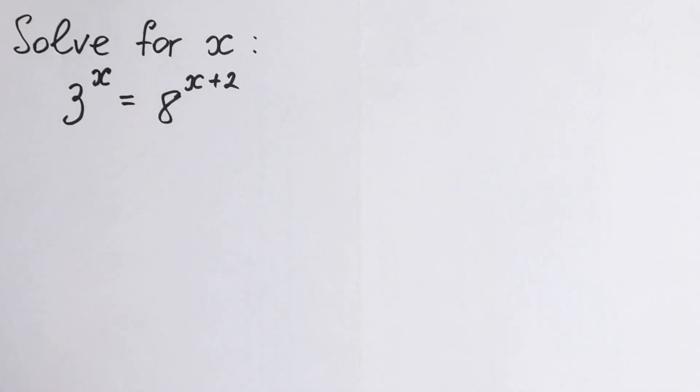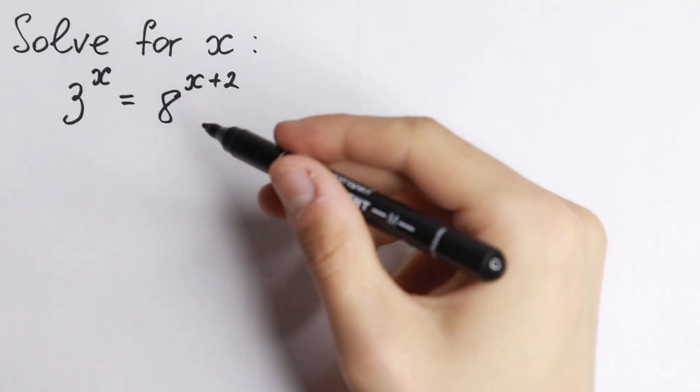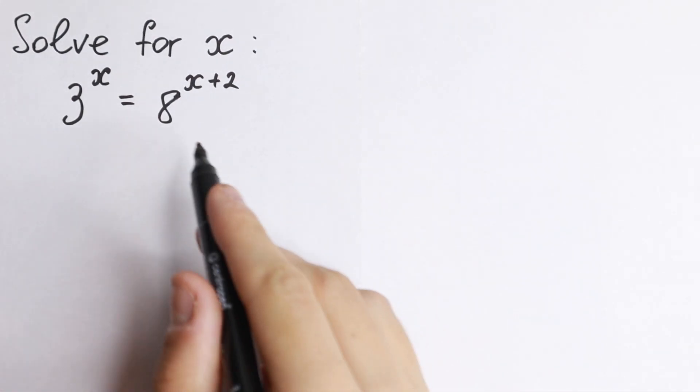Hello everyone, welcome back to MathMode. Today we have a really interesting exponential equation: 3^x = 8^(x+2). How can you solve this interesting equation?